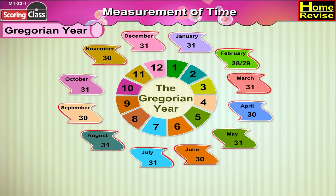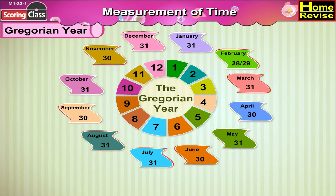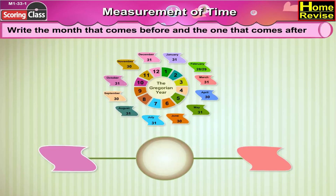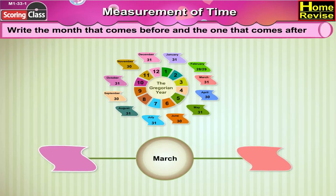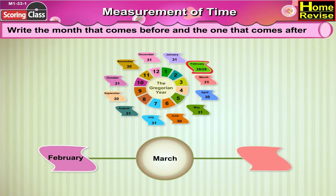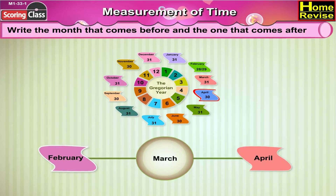Write the month before and month after March. Children, can you tell which month comes before March? Yes, it is February. And after March? Of course, it is April.